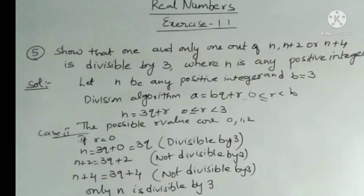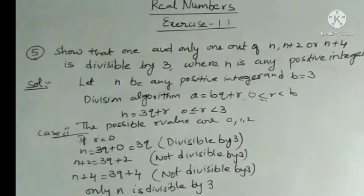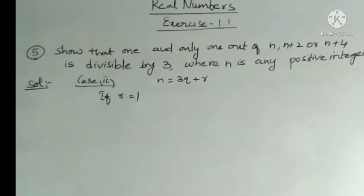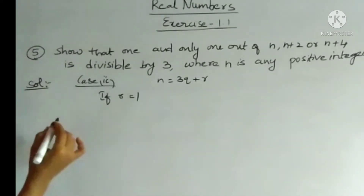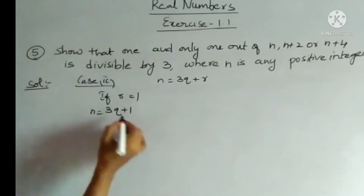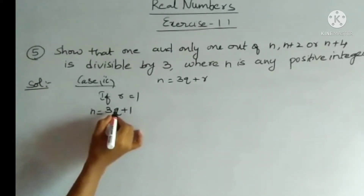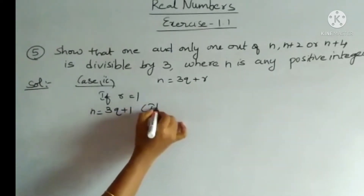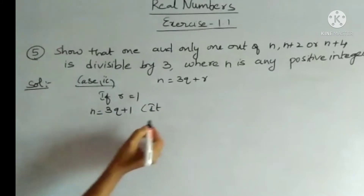In Case 2, we take r = 1. If r = 1, then n = 3q + 1. For example, 9 + 1 = 10, which is not divisible by 3, so n is not divisible by 3.